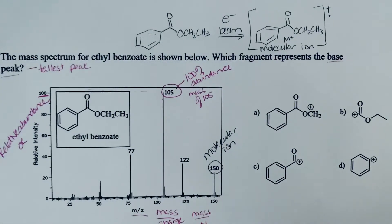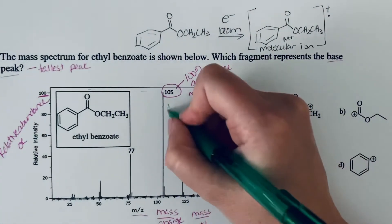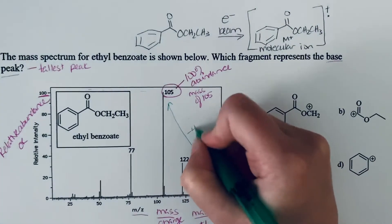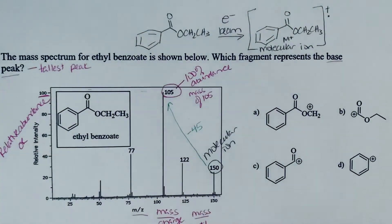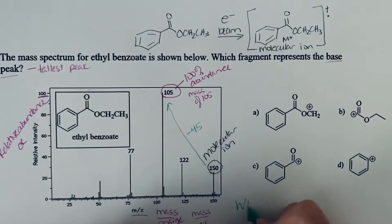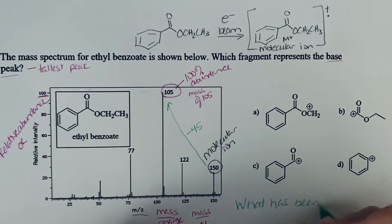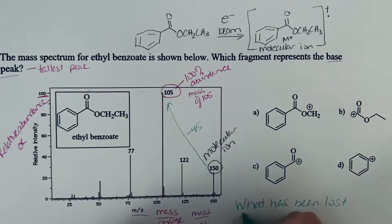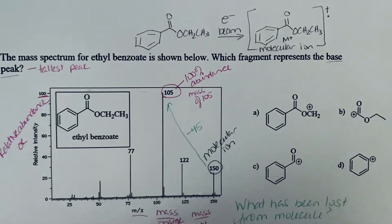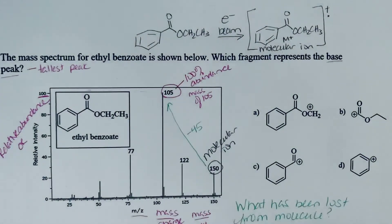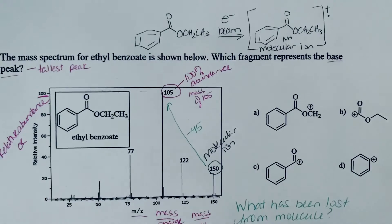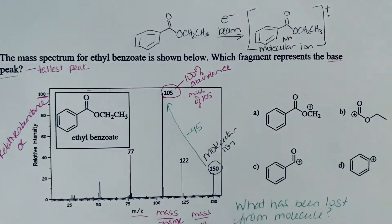If we look at from 150 to 105, we'll see that we're losing 45. So the question we're asking ourselves is what has been lost from the molecule? We know we're losing a mass of 45. Now we don't want to start just calculating any combination of atoms that are going to get us to 45. We want to look at the structure and think about how this could fragment.